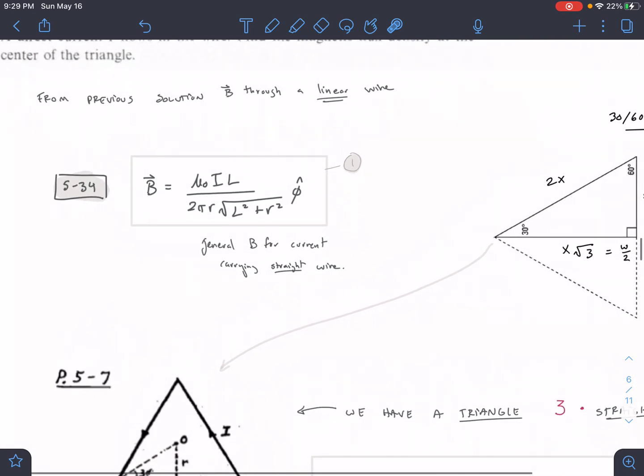So to start, we are going to use the equation 5-3-4, the general equation for B-fields due to a wire. And the B-field is circling that wire in the phi hat direction. So we know that it's circling each respective wire.